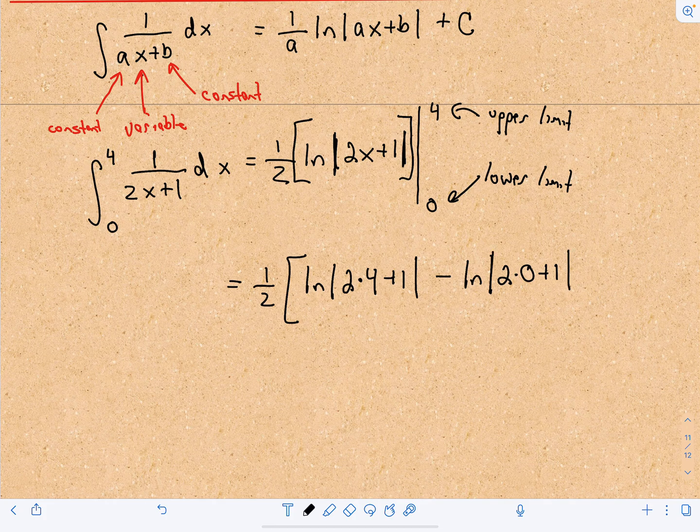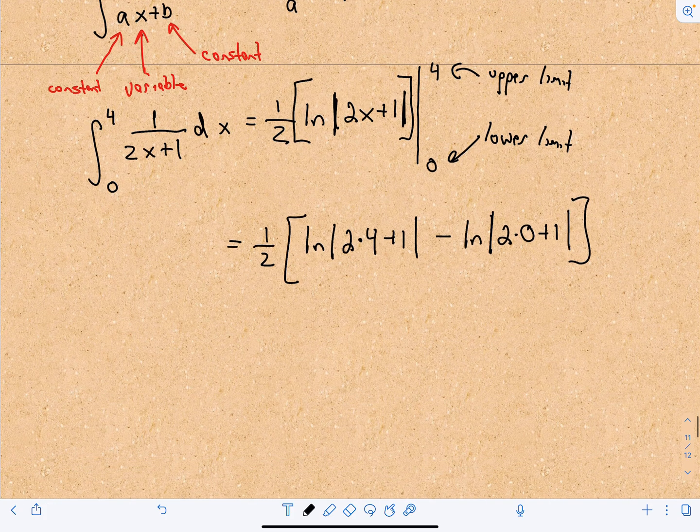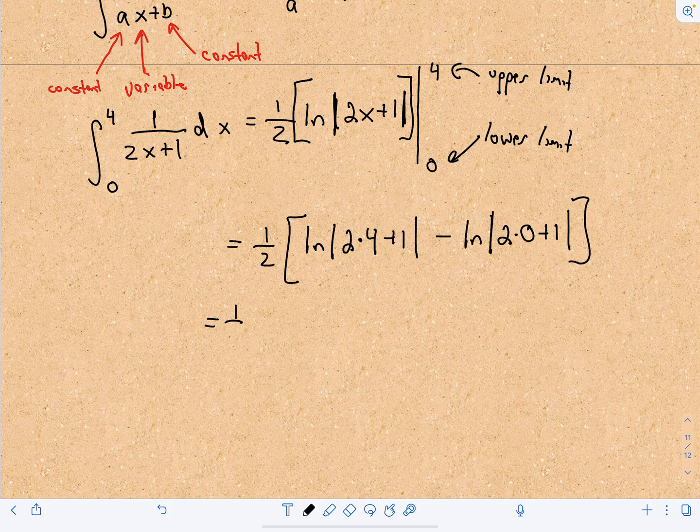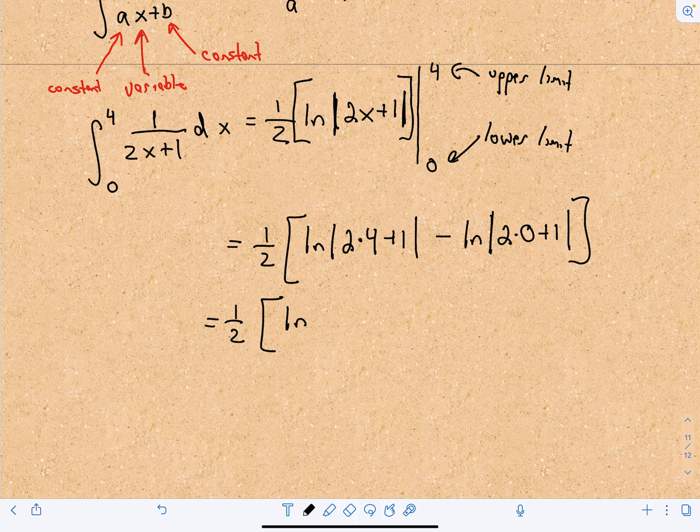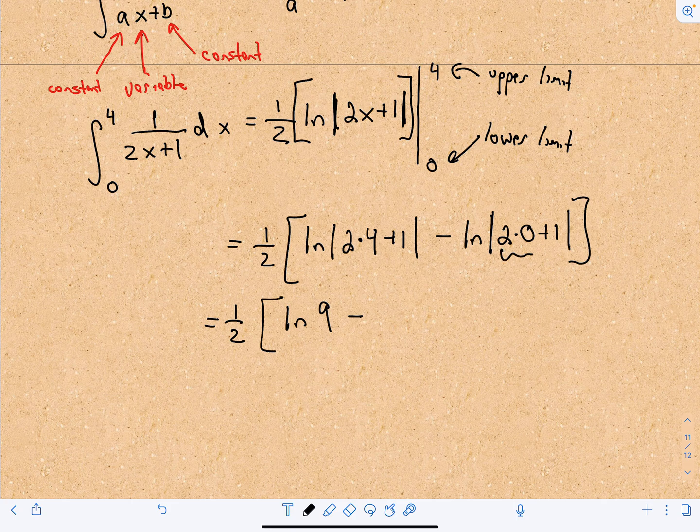So then we would have 2 times 0 plus 1. The absolute value is redundant here because these are clearly positive values. So we've got 1 half of - I'm going to drop the absolute value - 2 times 4 is 8 plus 1. That's the natural logarithm of 9, minus 2 times 0 is 0 plus 1, which is the natural logarithm of 1.